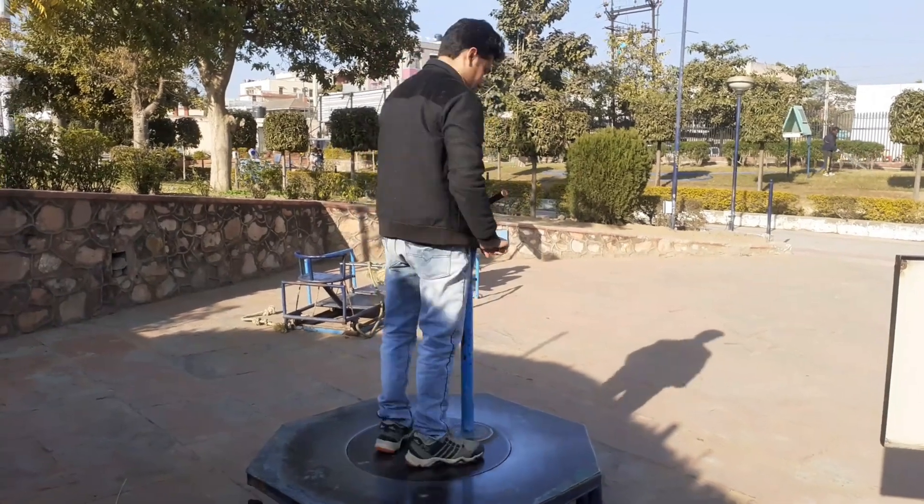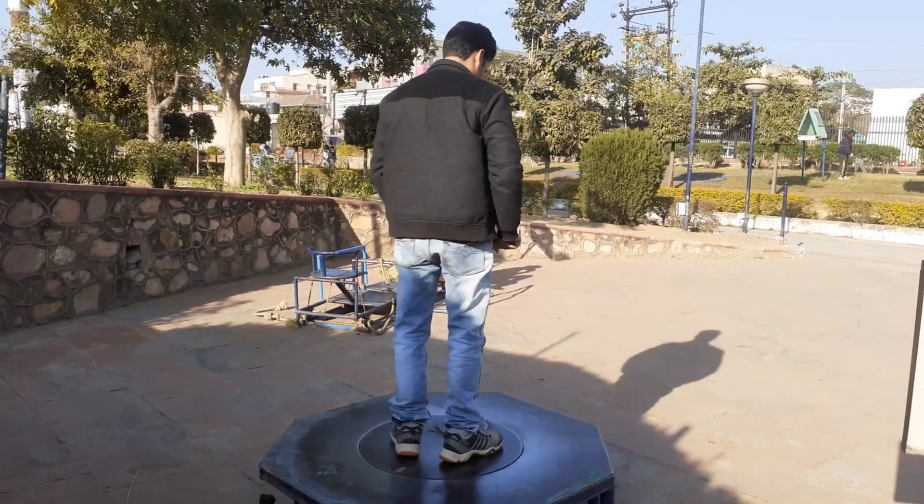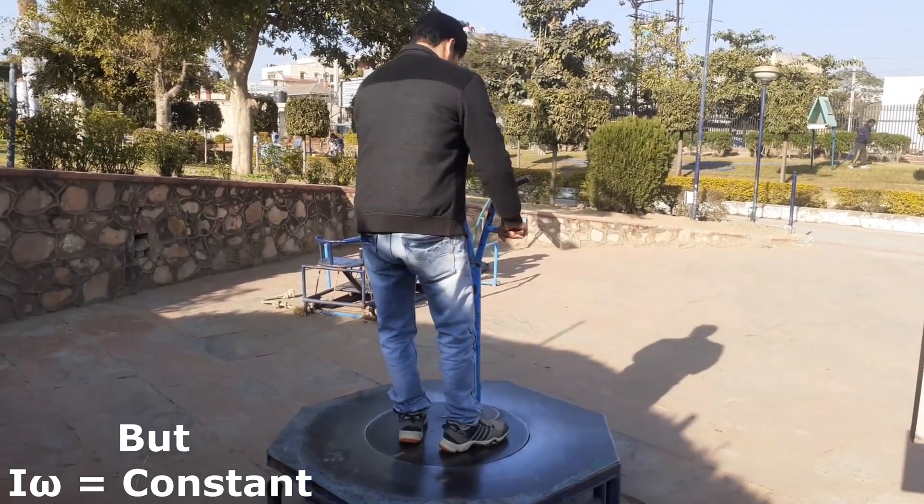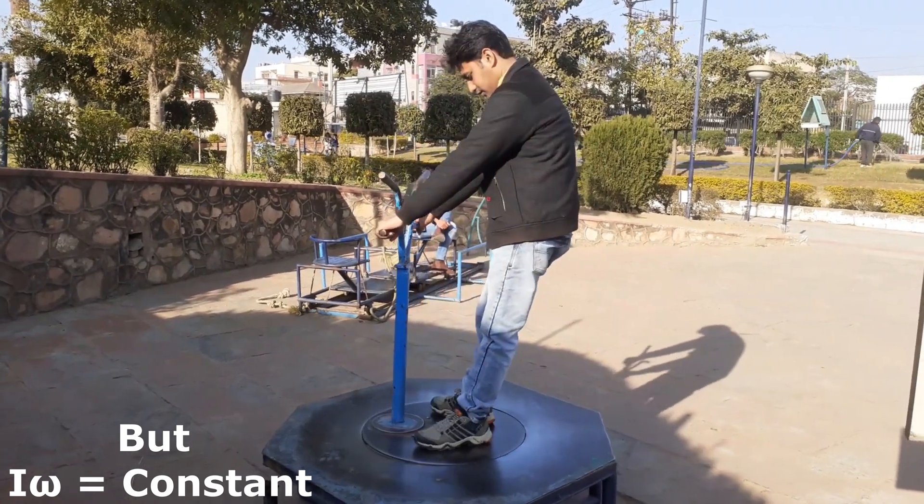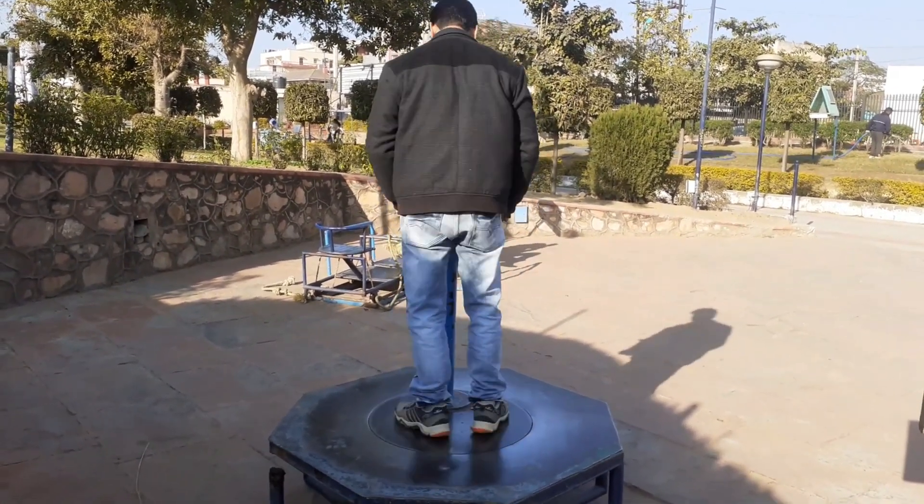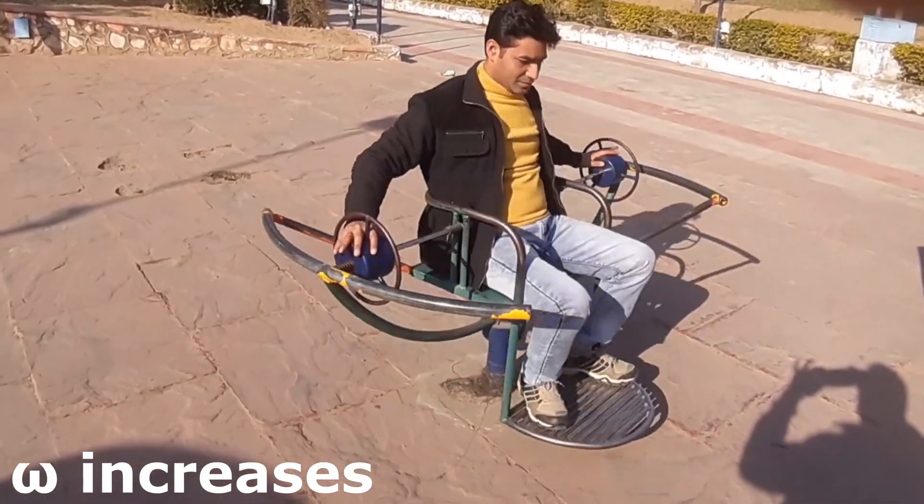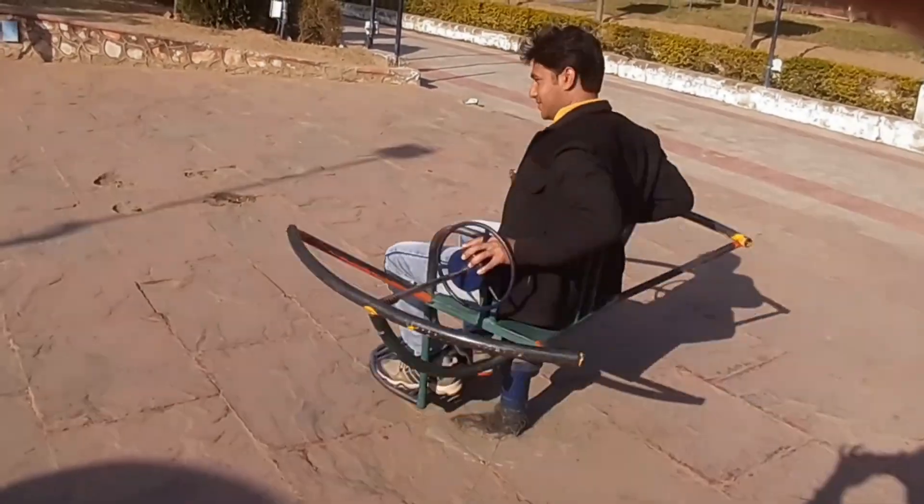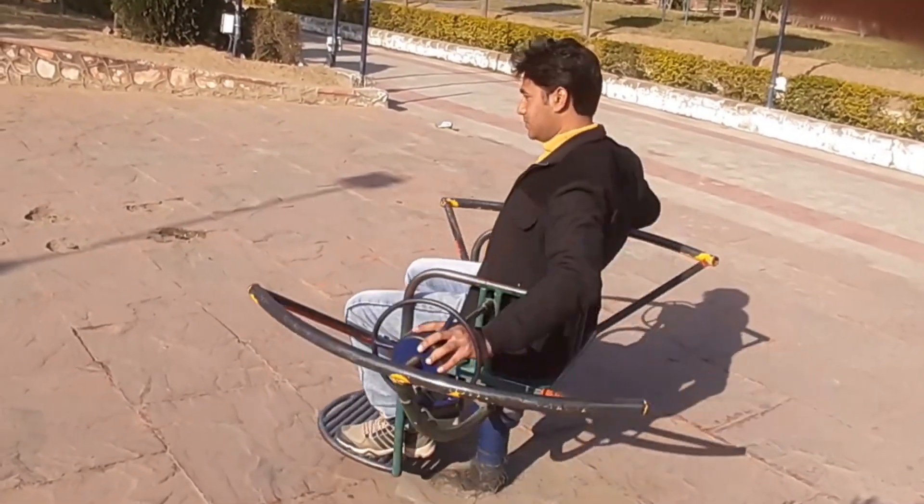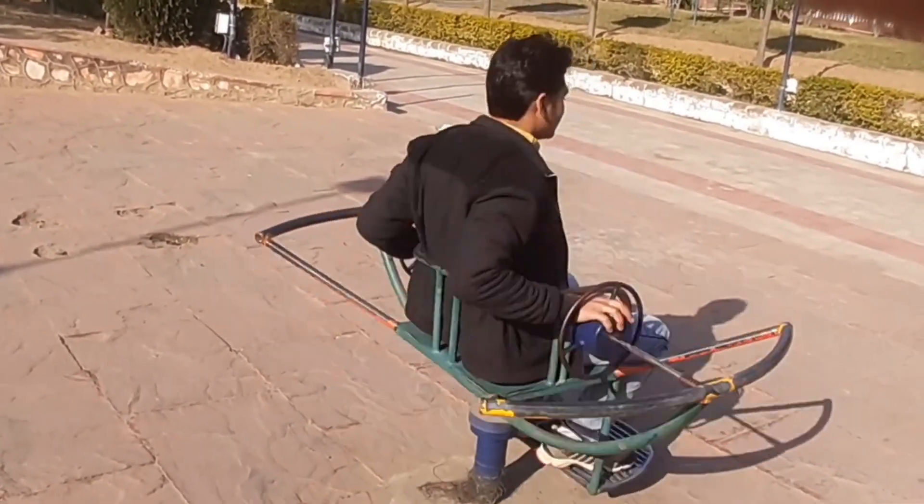But according to the conservation of angular momentum, the product of the moment of inertia and the angular velocity must be constant. So to compensate for this decrease in I, the omega of the body increases. And just the opposite of this happens when the object moves away from the axis of rotation.